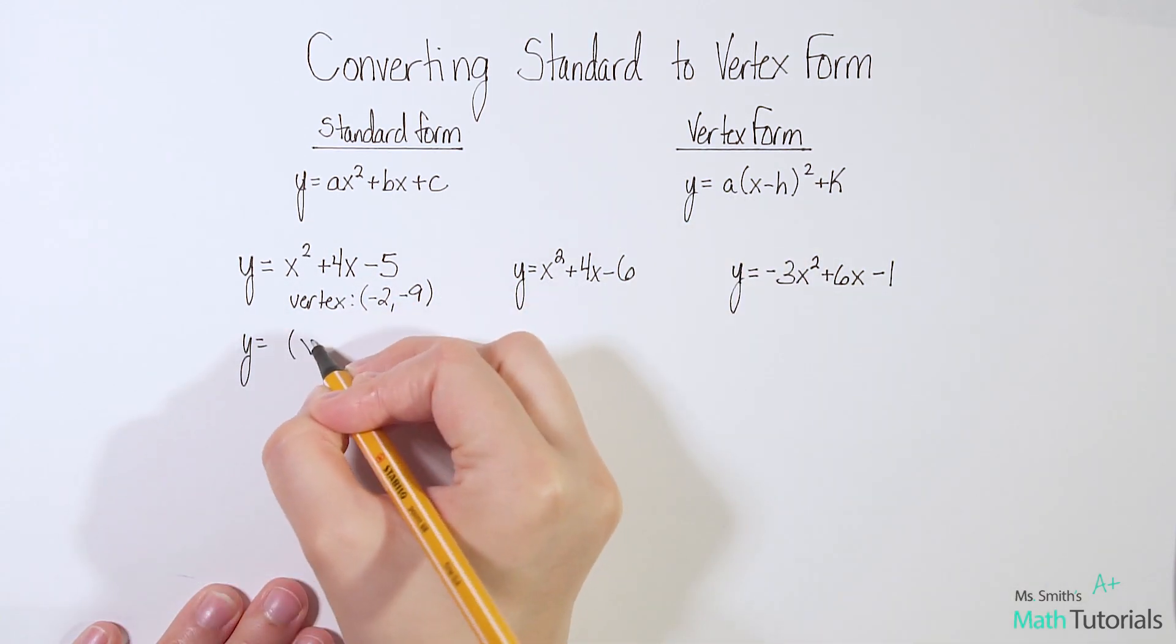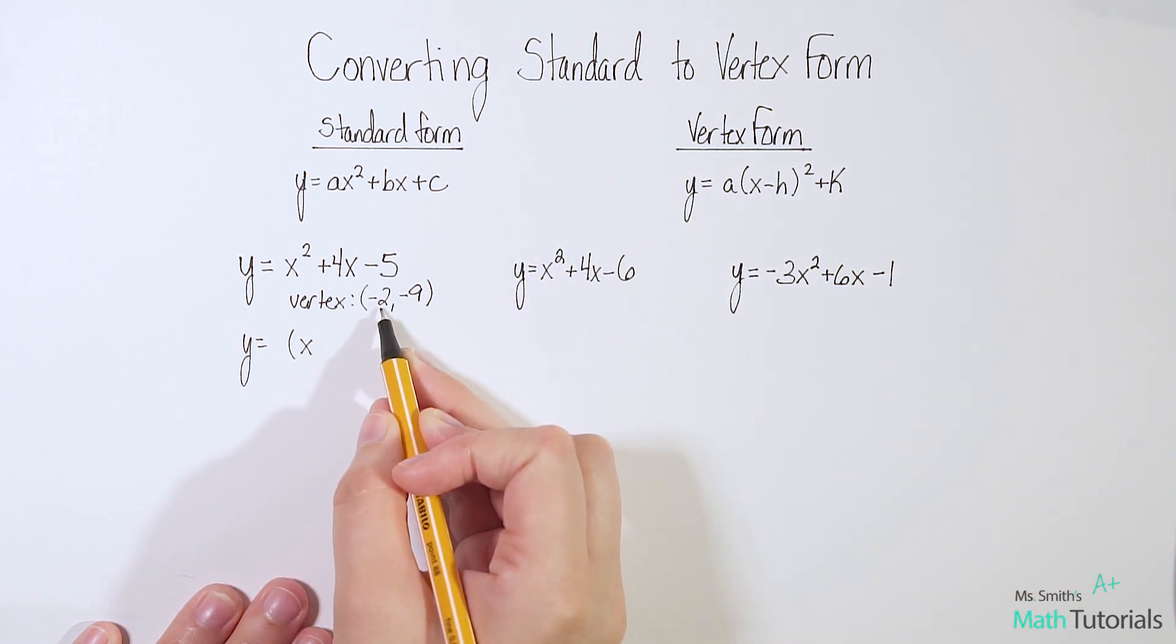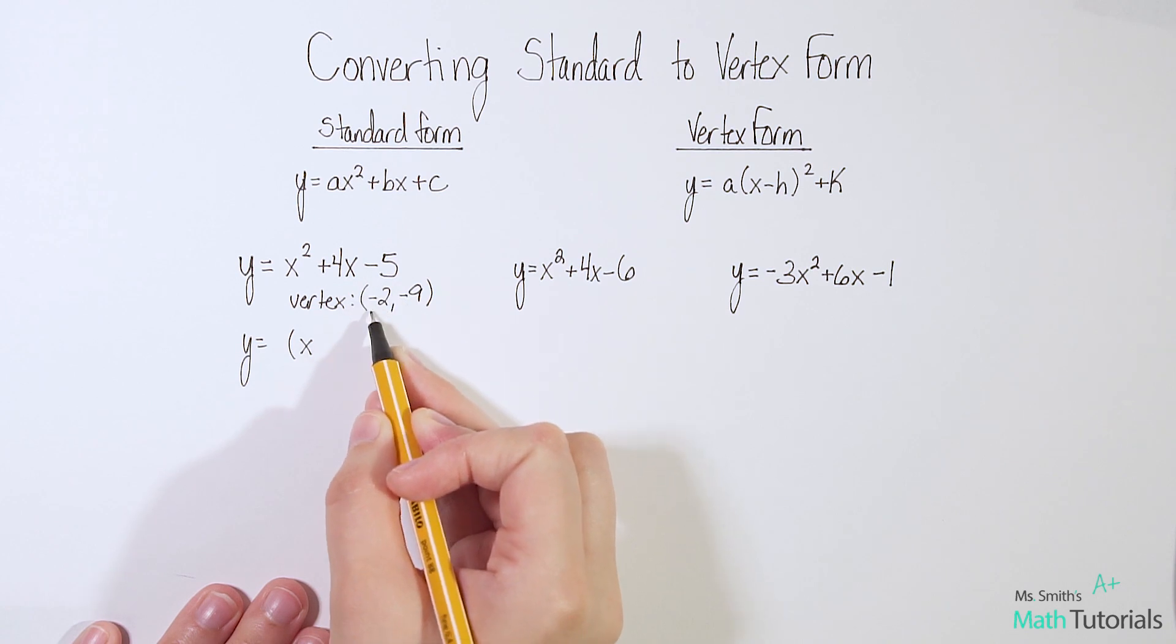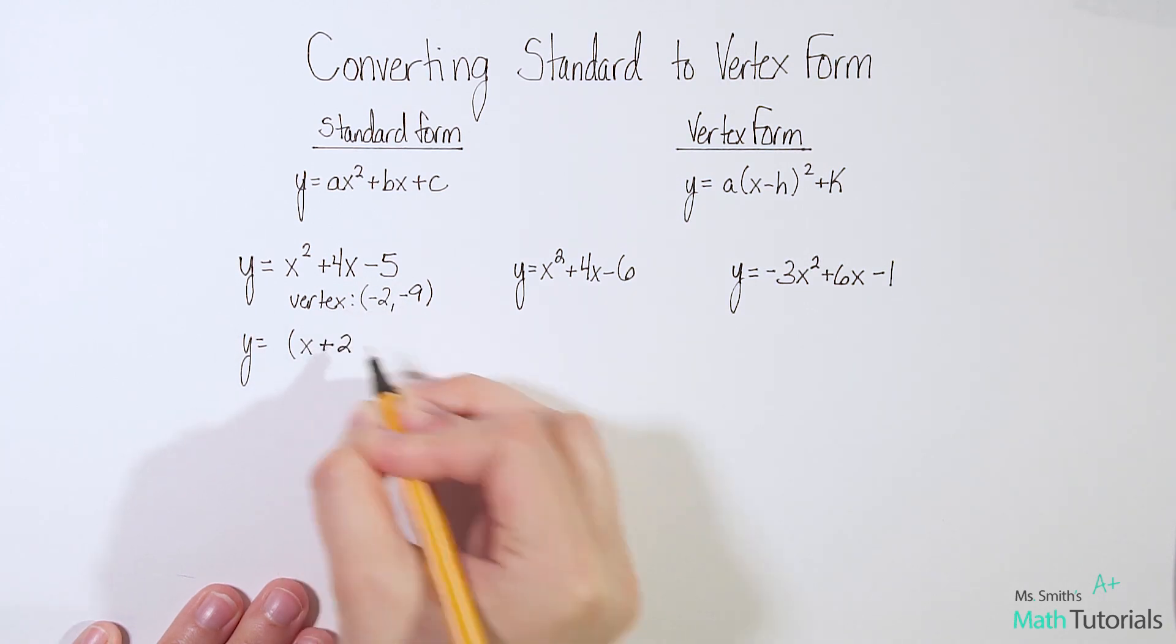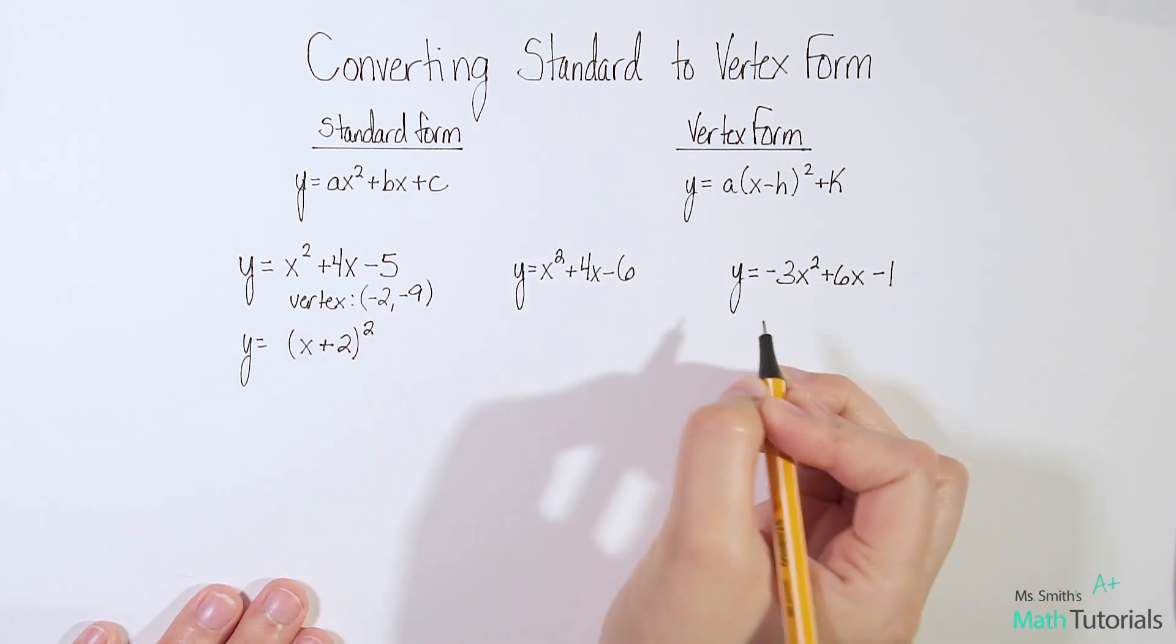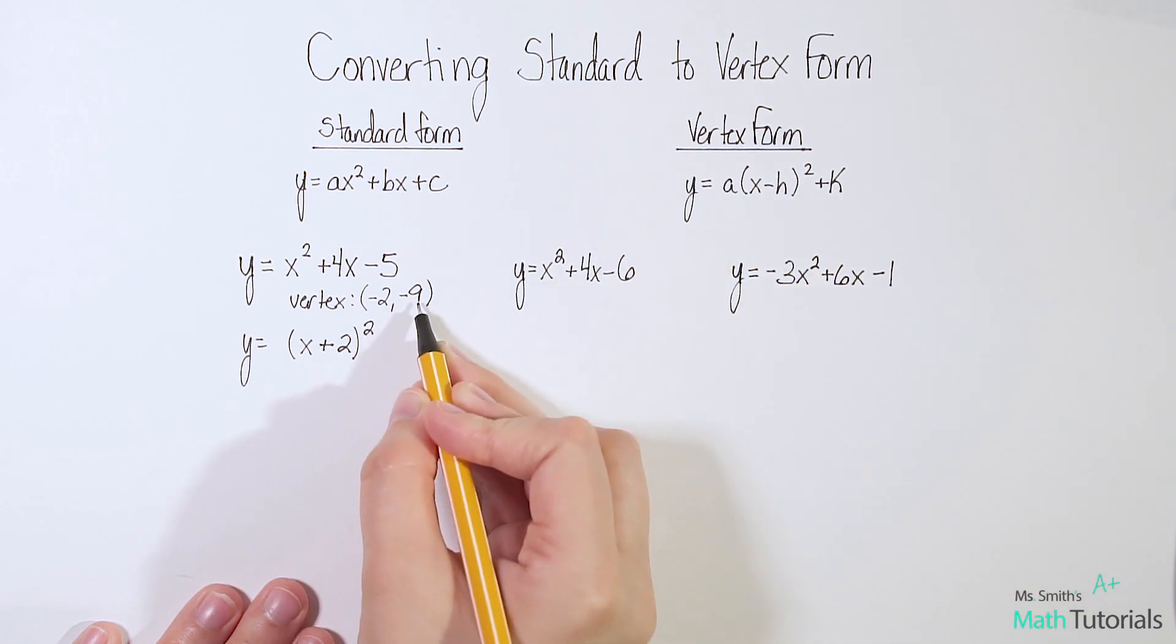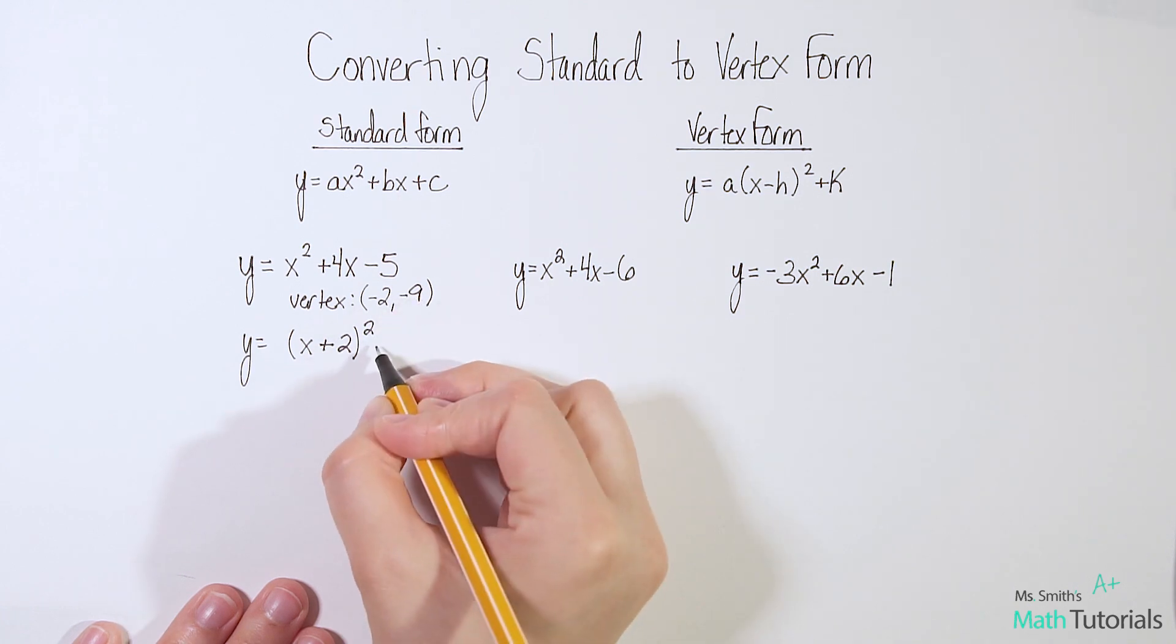Now I have my parentheses, x. Now we have our h. So our h, remember, is our x value of our vertex, but we flip the sign. So this is minus 2, I need to make it plus 2. End parentheses squared. And then our plus k. So remember k is our y value. So in this case, and it is the true sign of what we see, so this is negative 9, so I put in minus 9.